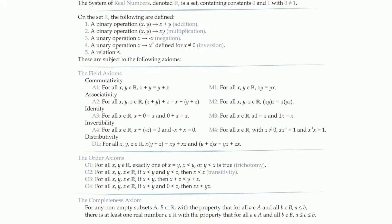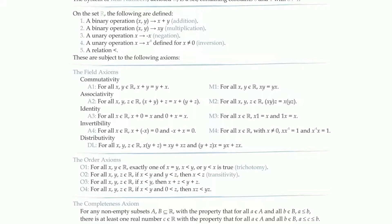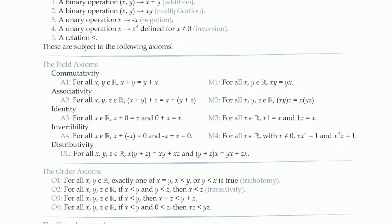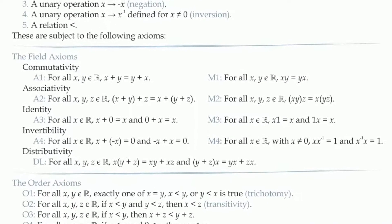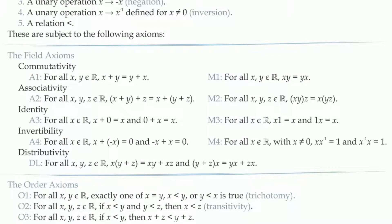The first nine axioms in the definition of the real number system are commonly referred to as the field axioms. The reason they're called the field axioms is that there are a lot of different mathematical systems that obey this set of axioms, not just the real numbers.